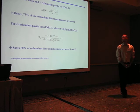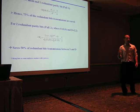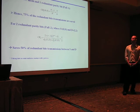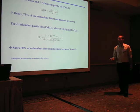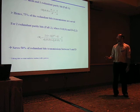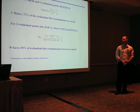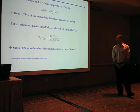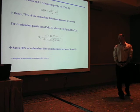For example, on a four by four network on chip mesh with one redundant parity bit attached to the packet, we save 75% of redundant bits transmission. For two parity bits where the source and destination coordinates are given, we can save 50% of the redundant bits transmission.